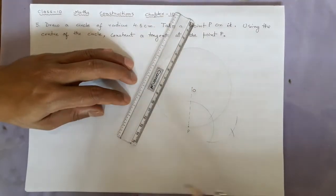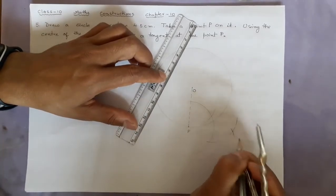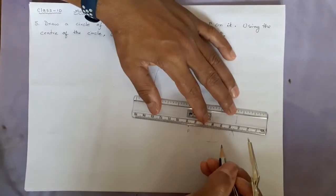So this way, if I join these two points, this will be 90 degrees to the radius.